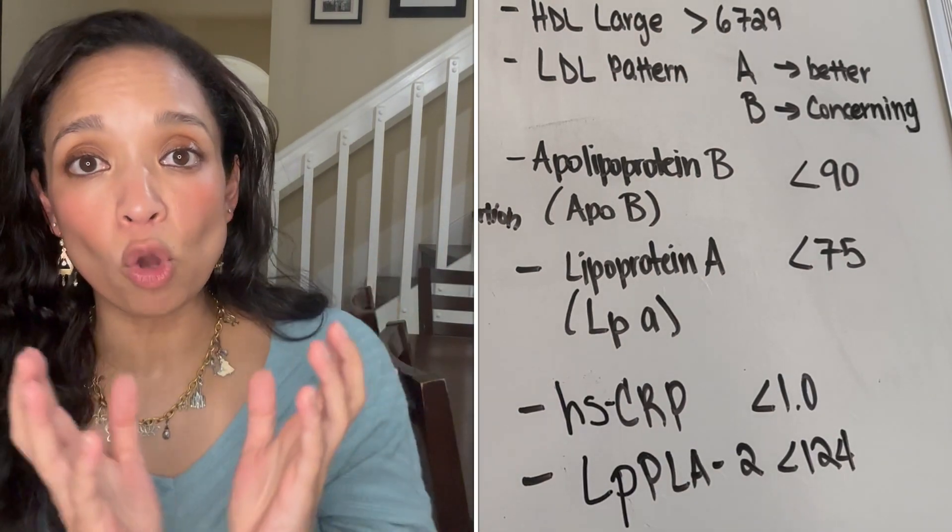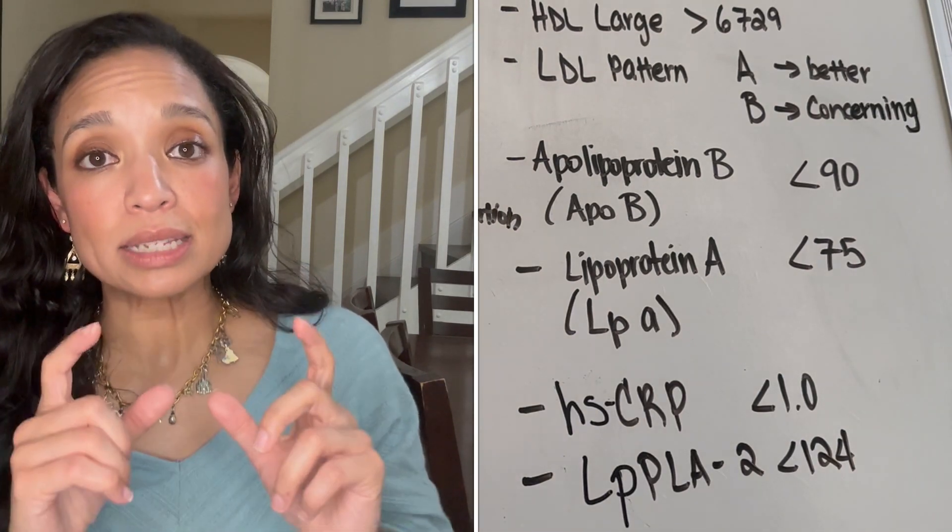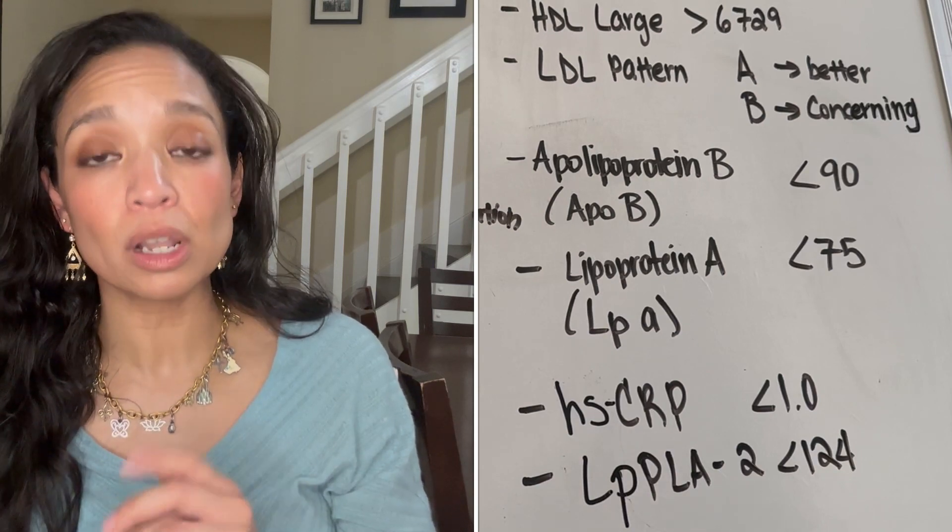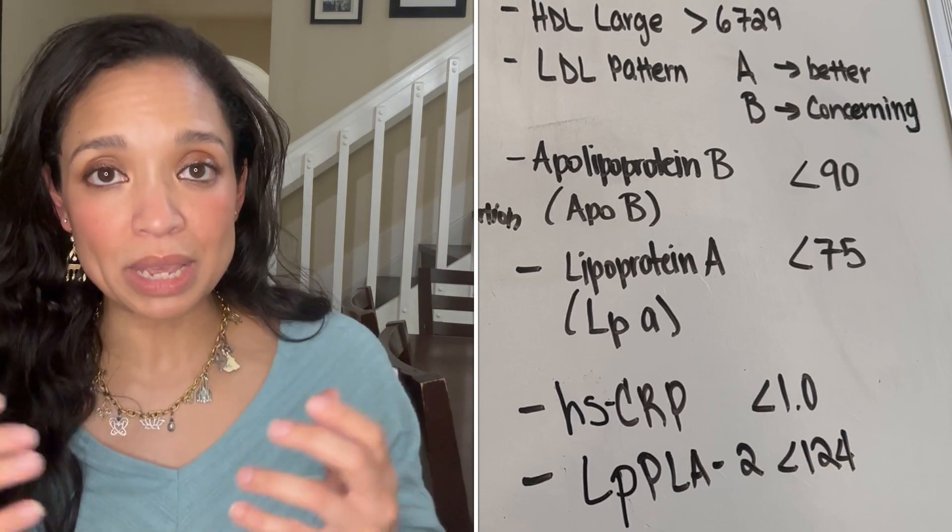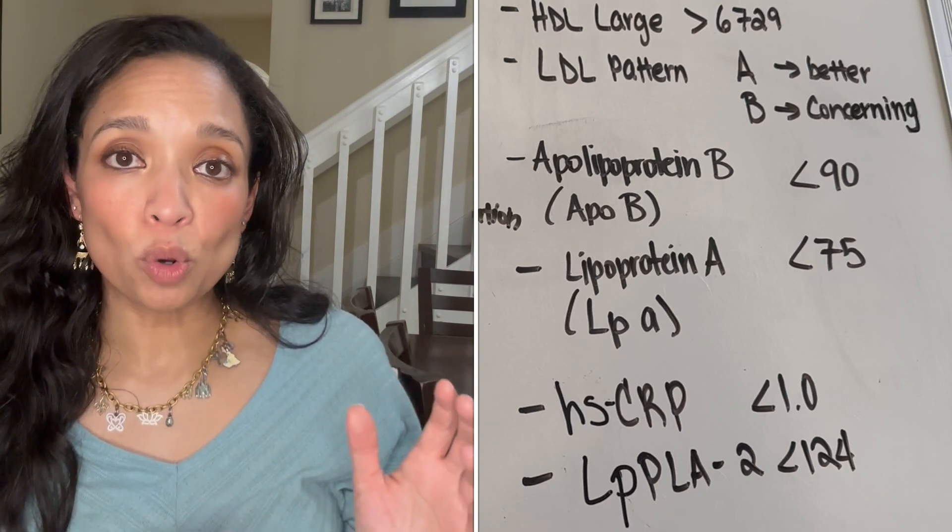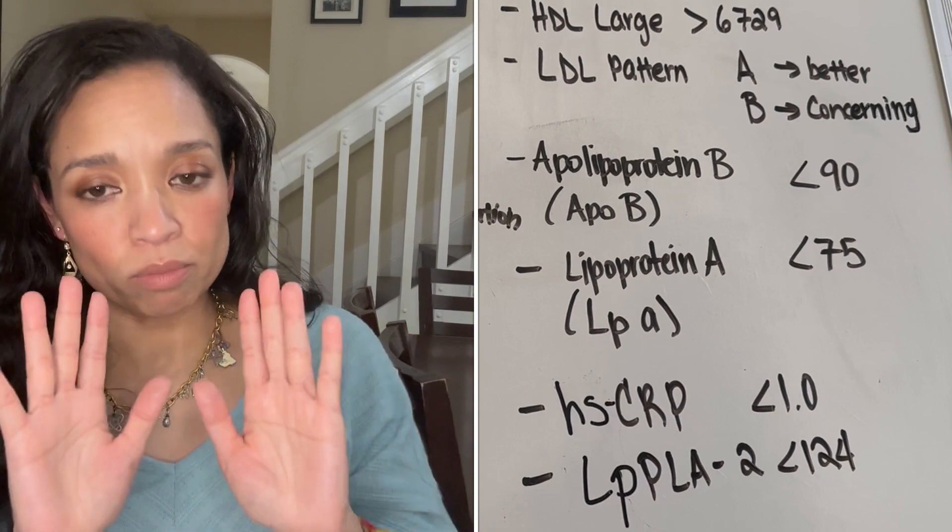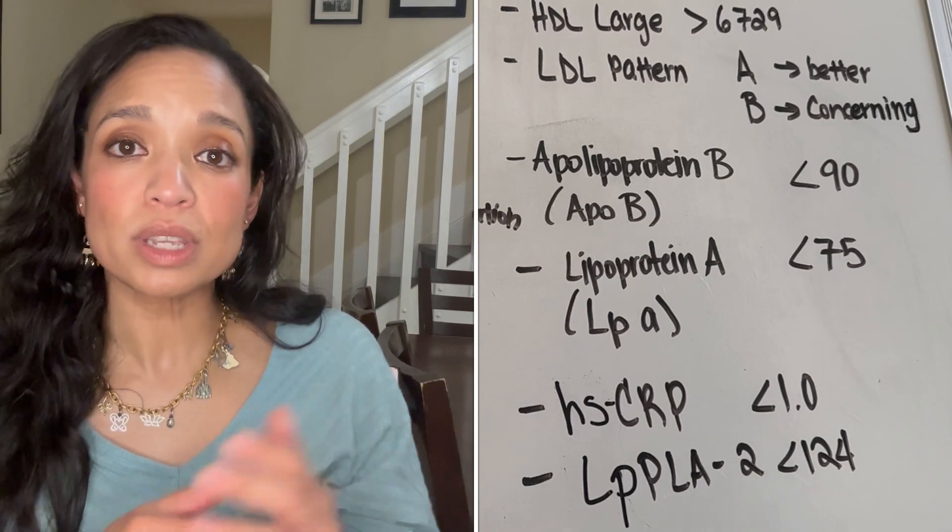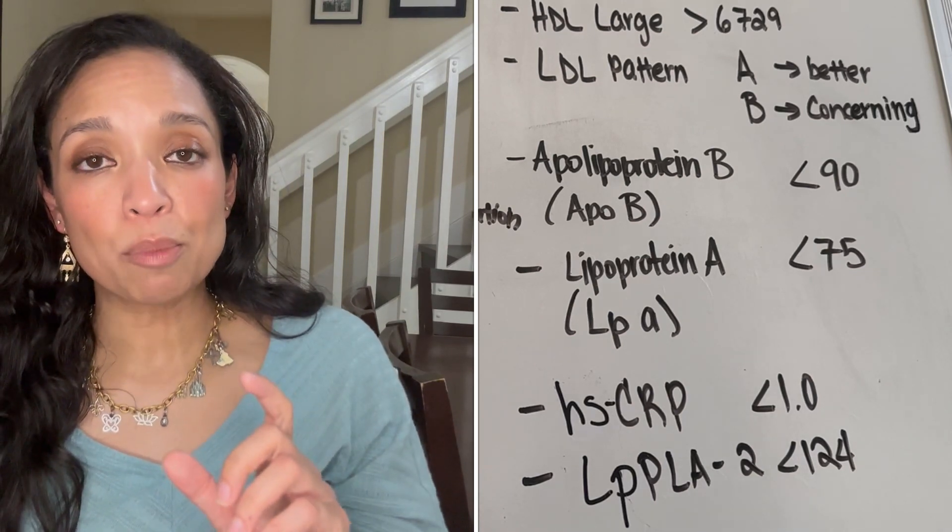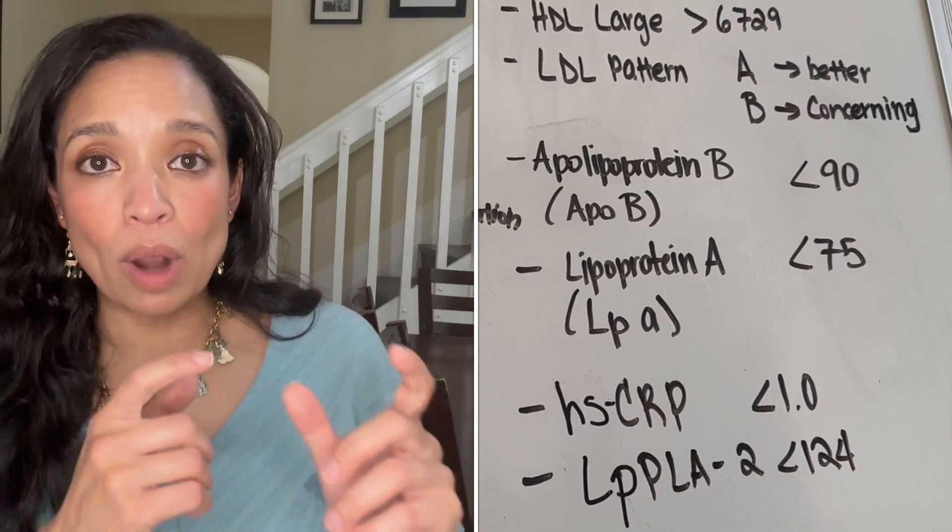Moving away now from the particle number, size, and the overall pattern of the particles, we're going to take a step back to the cholesterol molecule itself and take a look at the next things that we get reported on an advanced lipid panel: your apolipoprotein B and your lipoprotein A or LP little a. Your apolipoprotein B, or ApoB as you can see it on the screen, in the most basic sense is helping us understand how the cholesterol is transported around in your body.